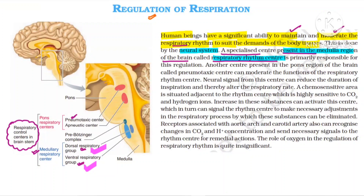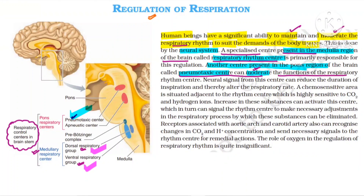Another center is present in the pons — that is known as the pneumotaxic center. Its function is to moderate, meaning it will check and cut short the inspiration rate, so that the respiration rate increases. The pneumotaxic center moderates, meaning it adjusts, the function of the respiratory rhythm center. So who is moderating the function of the respiratory rhythm center? That is the pneumotaxic center. And who is moderating the respiratory rhythm? That is the respiratory rhythm center.